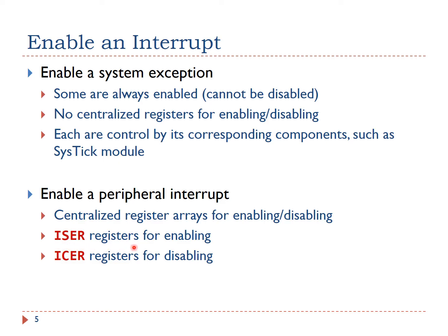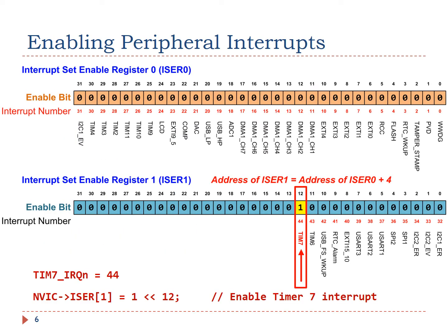ISER registers are used to enable peripheral interrupts, and ICER registers are used to disable them. We can enable a peripheral interrupt by writing one to the corresponding bit of the ISER register. ISER stands for Interrupt Set Enable Register. For example, to enable the interrupt for timer 7, whose interrupt number is 44 for STM32L1: ISER0 enables interrupts 0 to 31, ISER1 enables interrupts 32 to 63. To enable interrupt 44, we set bit 12 of ISER1 to 1.